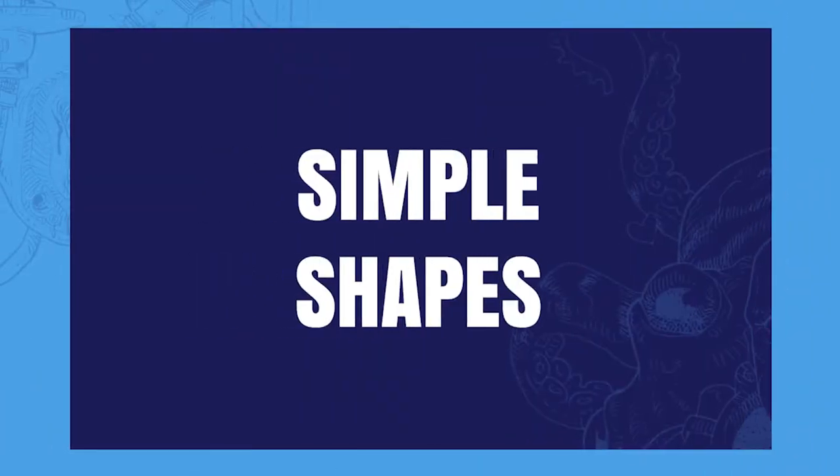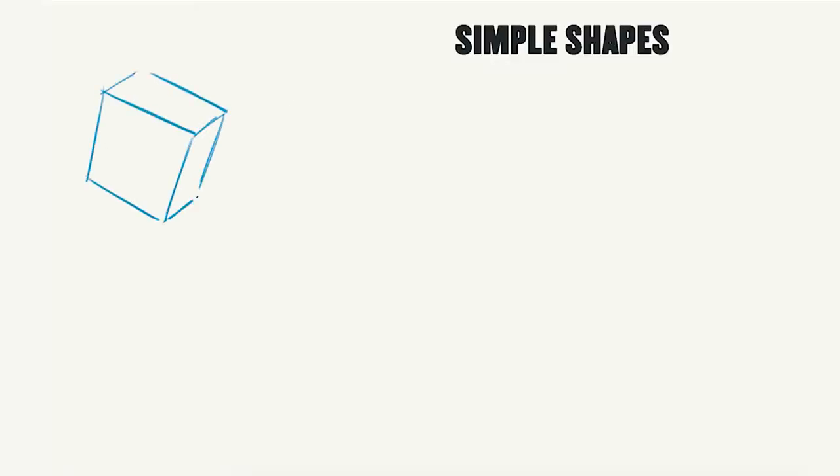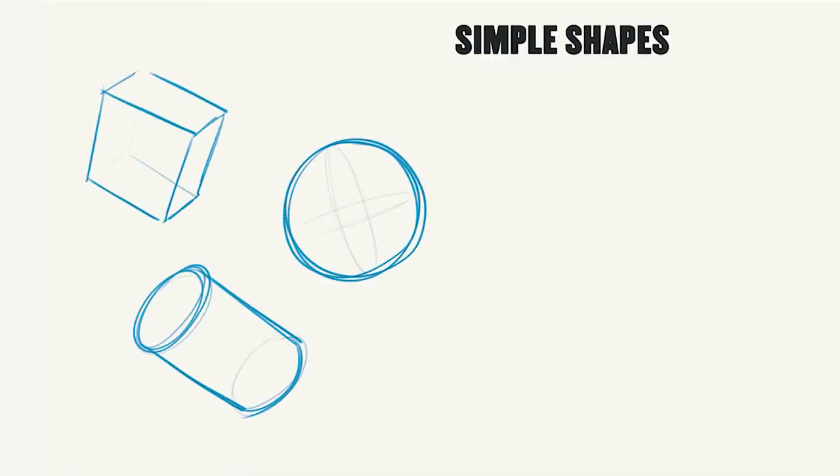Motorcycles are pretty awesome — let's see if we can draw them using simple shapes. Drawing a motorcycle can be pretty difficult; there's a lot of objects sticking out, wrapping around, going under. But instead of looking for the detailed and complicated shapes, we need to look for the big and simple shapes. Overall, there are three simple shapes that can be used for almost anything: a box, a cylinder, and a sphere.